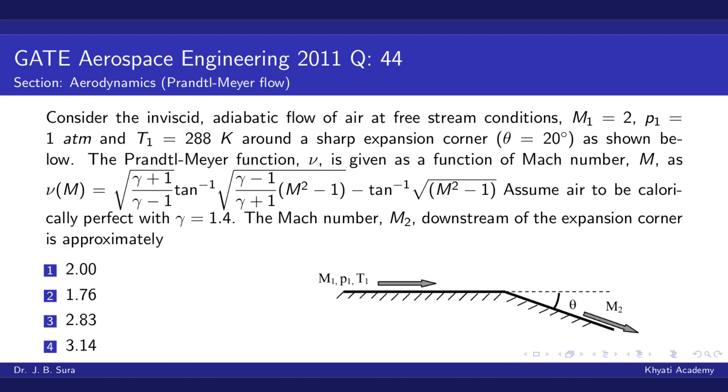The Prandtl-Meyer function ν is given as a function of Mach number M as ν(M) equals a big equation which you see on the screen.